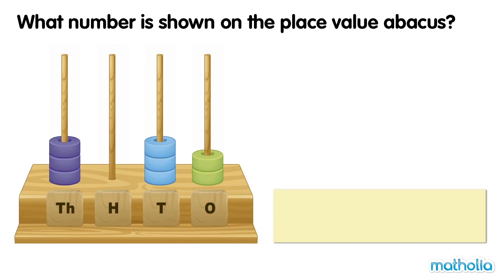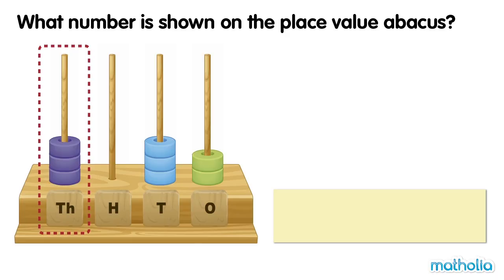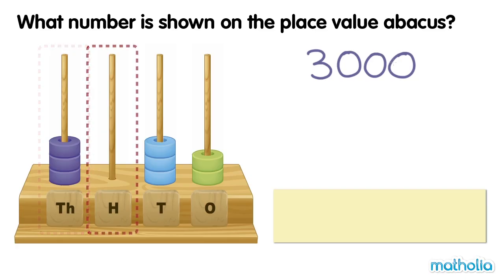What number is shown on the place value abacus? In the thousands place, there are three beads. The beads have a value of three thousand. In the hundreds place, there are no beads. The value is zero.